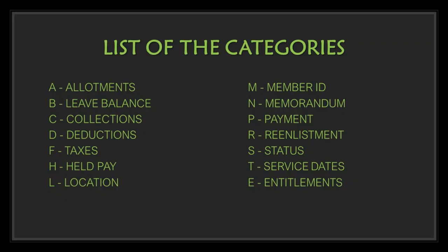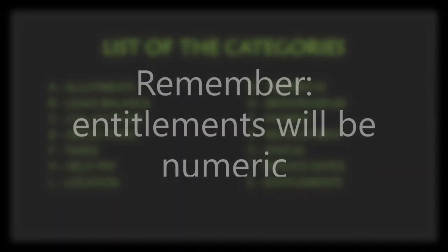Here is a list of the 14 categories: allotments, leave balance, collections, deductions, taxes, held pay, location, member ID, memoranda, payment, reenlistment, status, service dates, and entitlements. Like I said, entitlements will be numbers.